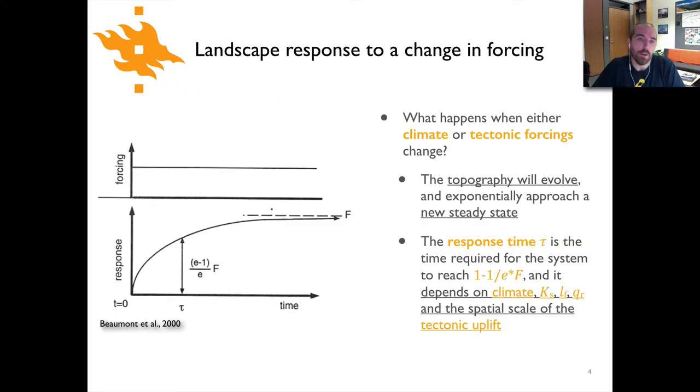So that's one example of how the landscape evolves with a constant tectonic forcing, a constant uplift velocity. Now the question is: what happens when we change the climate or the tectonic forcings? What happens to the landscape that we are simulating when we change those different things? What we can say is that the topography is going to change, the topography will be sensitive to either climate or tectonic forcings.